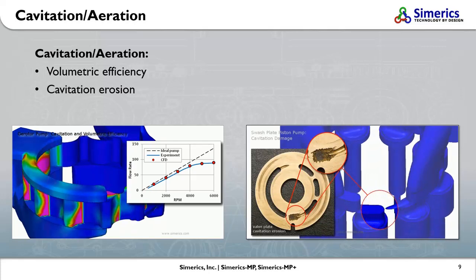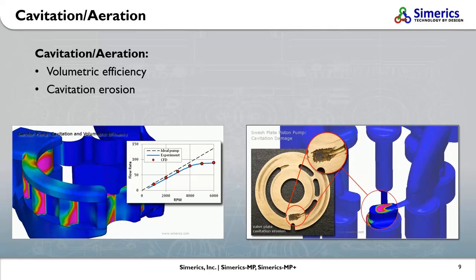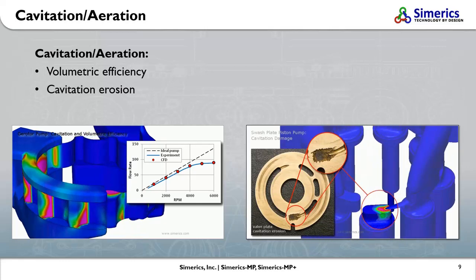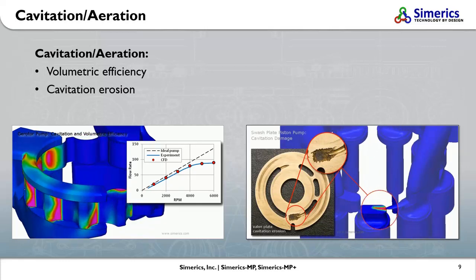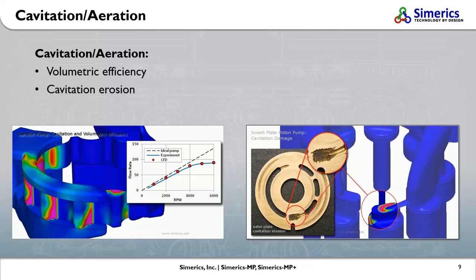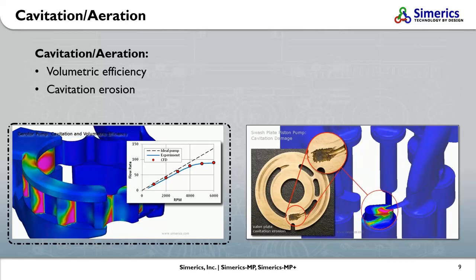In terms of cavitation, Sumerix MP Plus can perform two kinds of analyses. First, predicting the volumetric efficiency. For an ideal pump, the flow rate grows linearly with the pump rotation speed, as seen from the dashed line in the left diagram.